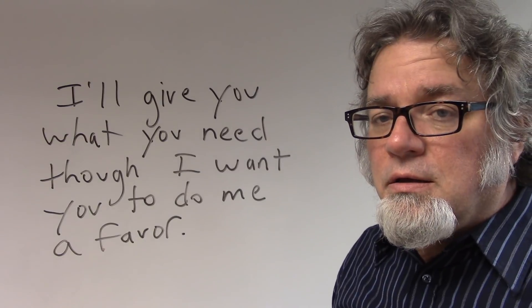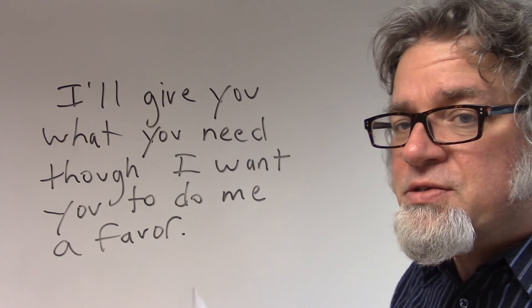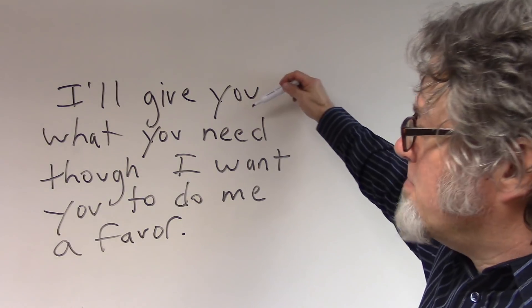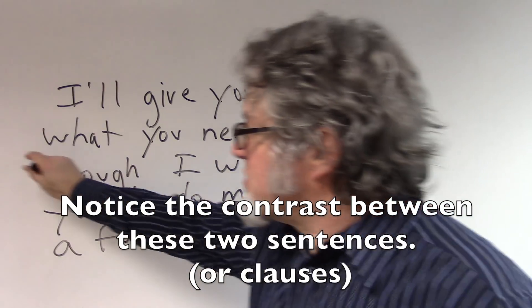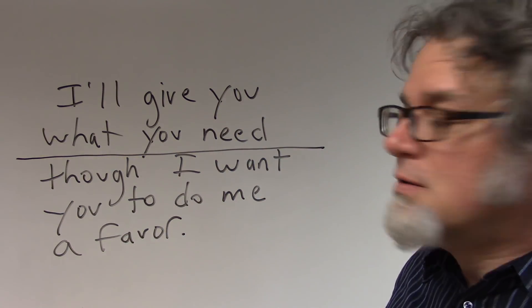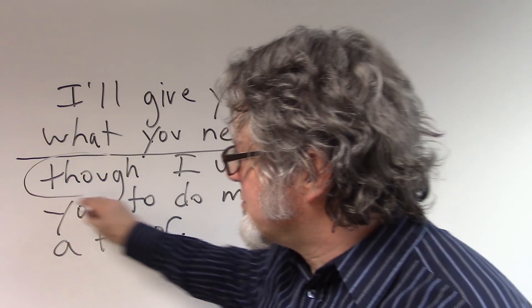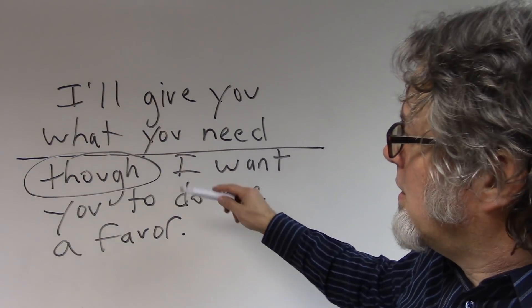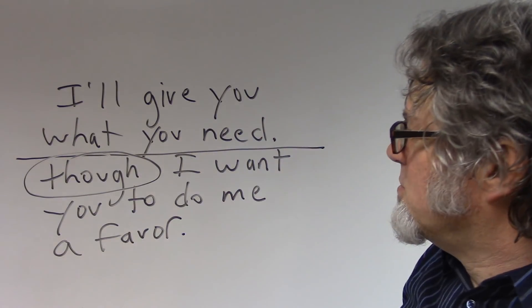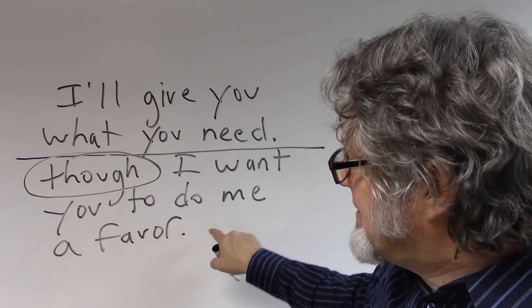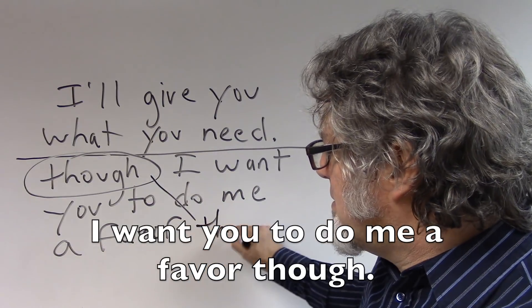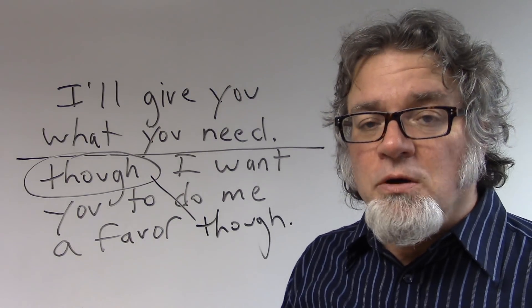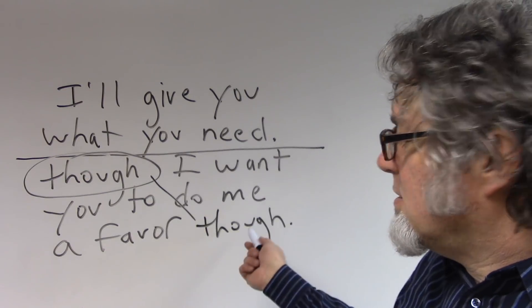I'll give you what you need though I want you to do me a favor. So, this sounds like some kind of a condition for this. If this doesn't happen, this may or may not happen. Notice the contrast between these two sentences. I'll give you what you need and then this is a type of conjunction. I want you to do me a favor or I could stop here. I'll give you what you need and then this can go at the end. I want you to do me a favor though. It's common to put the word though at the end of a sentence and sometimes you'll hear it or you might not hear it or if you do hear it you'll wonder what this means.